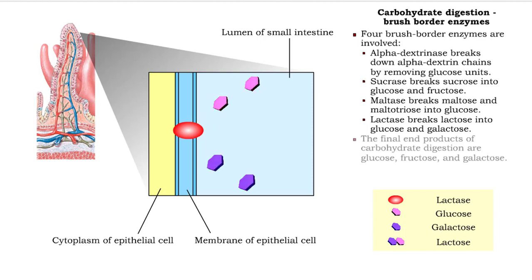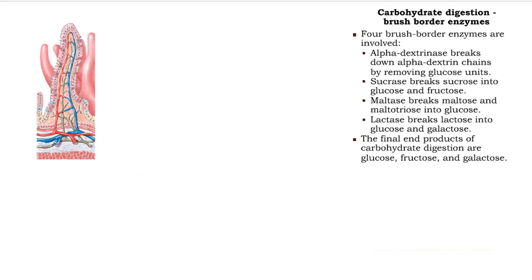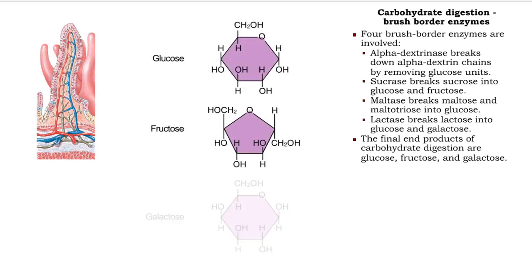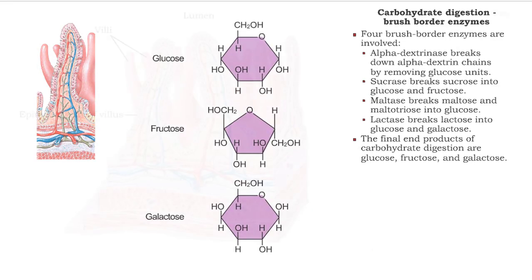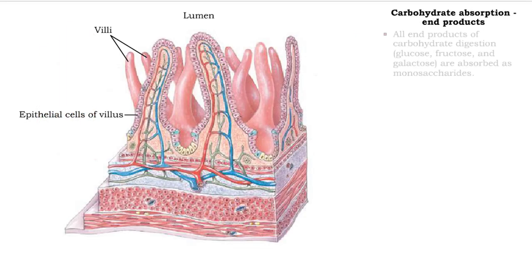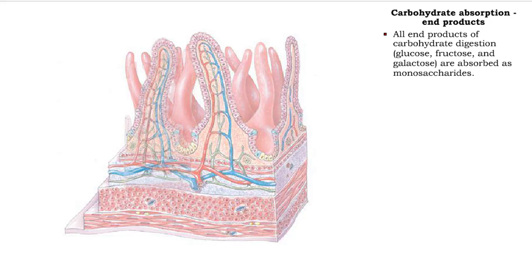Carbohydrate digestion ultimately produces glucose, fructose, and galactose as end products. All end products of carbohydrate digestion are absorbed as monosaccharides.